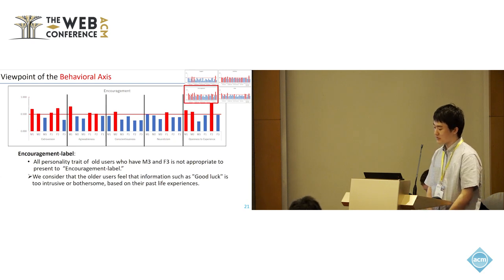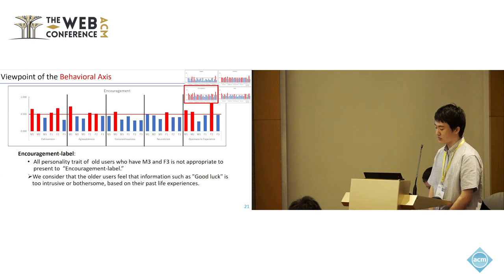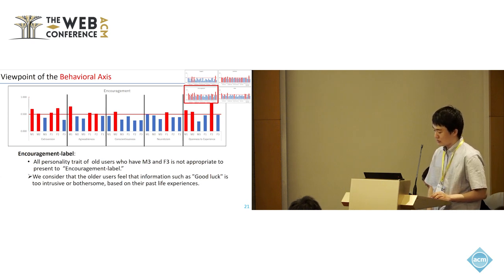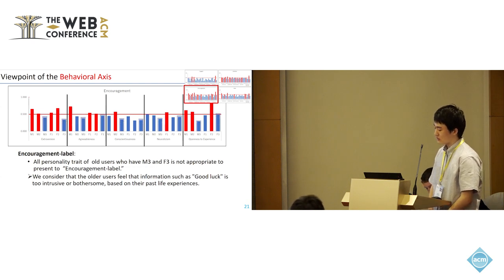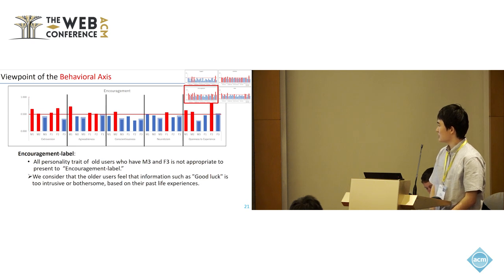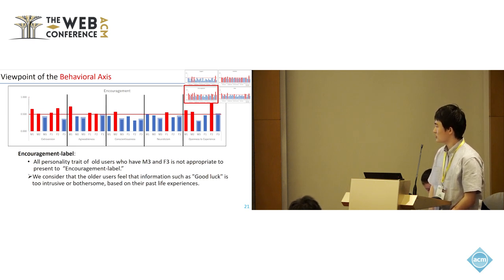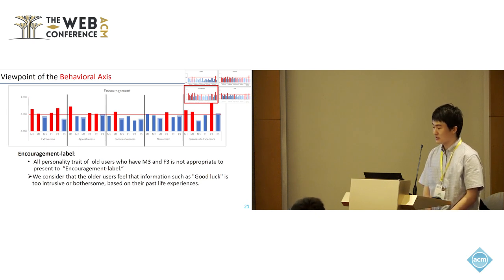Next, I will talk about the result of the encouragement level. From the result, for all personality traits, users in the older age groups M3 and F3 find encouragement level not appropriate. We consider that older-generation users feel that information such as 'good luck' is too casual or bothersome based on their past life experience.